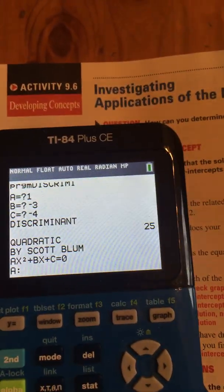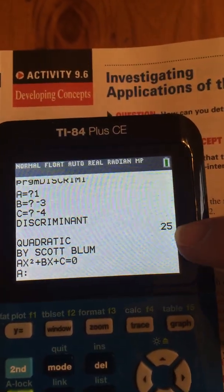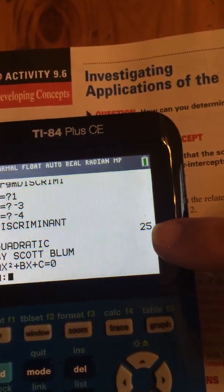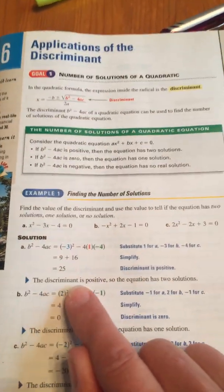25 is not negative. So that means they're not imaginary solutions. It is not zero. So it doesn't mean there's not one solution. It means there's two solutions. If we look where they did it in the book, they said it's positive. So it has two solutions.